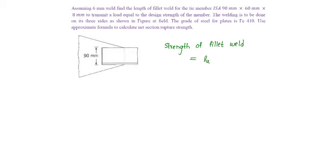Strength of fillet weld is given as length of the weld into throat thickness into fu by root 3 into gamma mw.